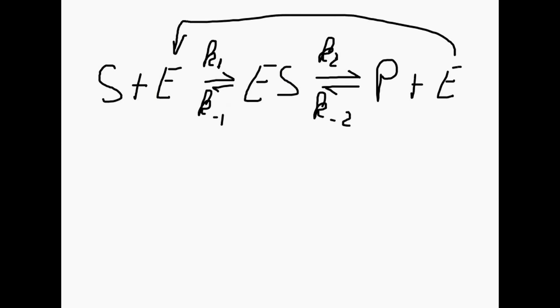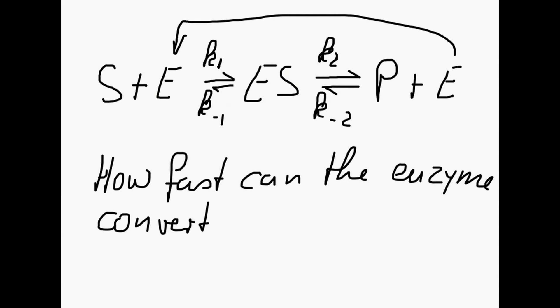Ideally, what we want to achieve is to make a statement about how fast the enzyme can convert the substrate into a product, whatever this product might be. That is our main aim that we want to achieve.